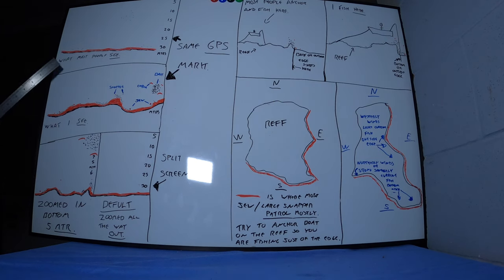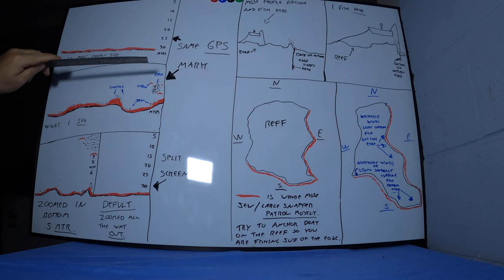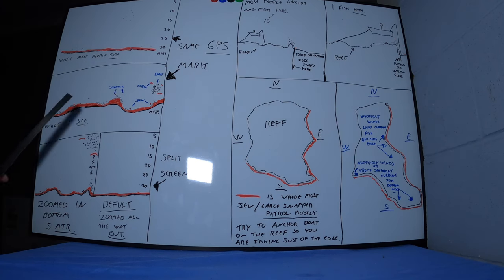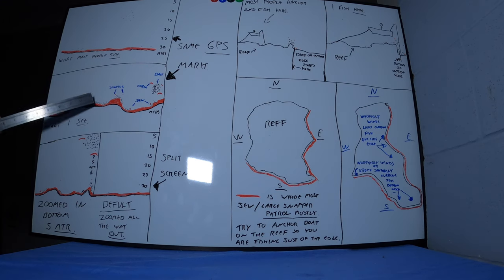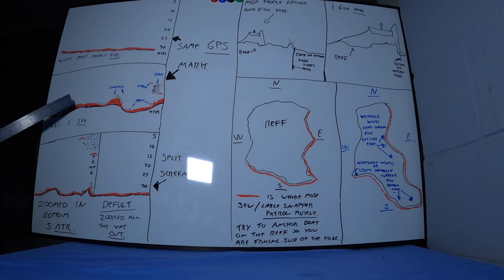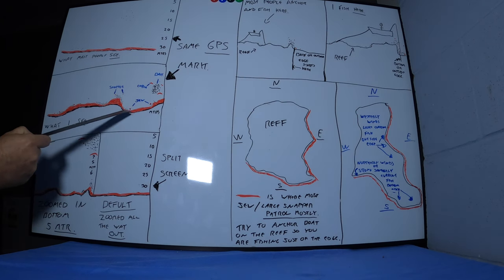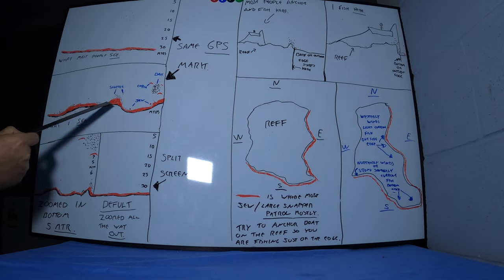But once you get used to your sounder, they've got bottom blocks on them. You can zoom into the bottom like five or ten meters, and that's what I do. I zoom in at about five meters, sometimes ten meters from the bottom. When you do that, different ball game. You'll see the bottom, you'll see little ledges and bumps all over the place. You'll see lots of little dots which could be bait fish, trag jew, reef fish, all sorts of things.